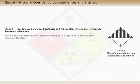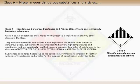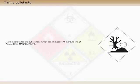Class 9 covers substances and articles which present a danger not covered by other classes in the Code. Substances considered hazardous to the aquatic environment are considered together with Class 9 substances and articles for the purpose of classification under the Code. Marine pollutants are substances which are subject to the provisions of Annex 3 of Marpol 73/78.